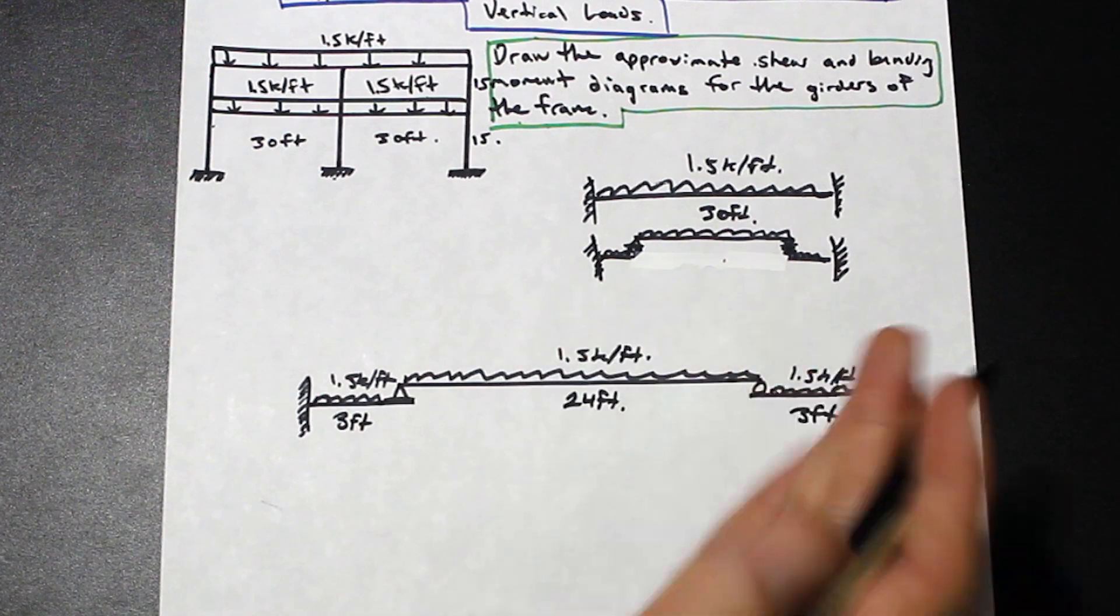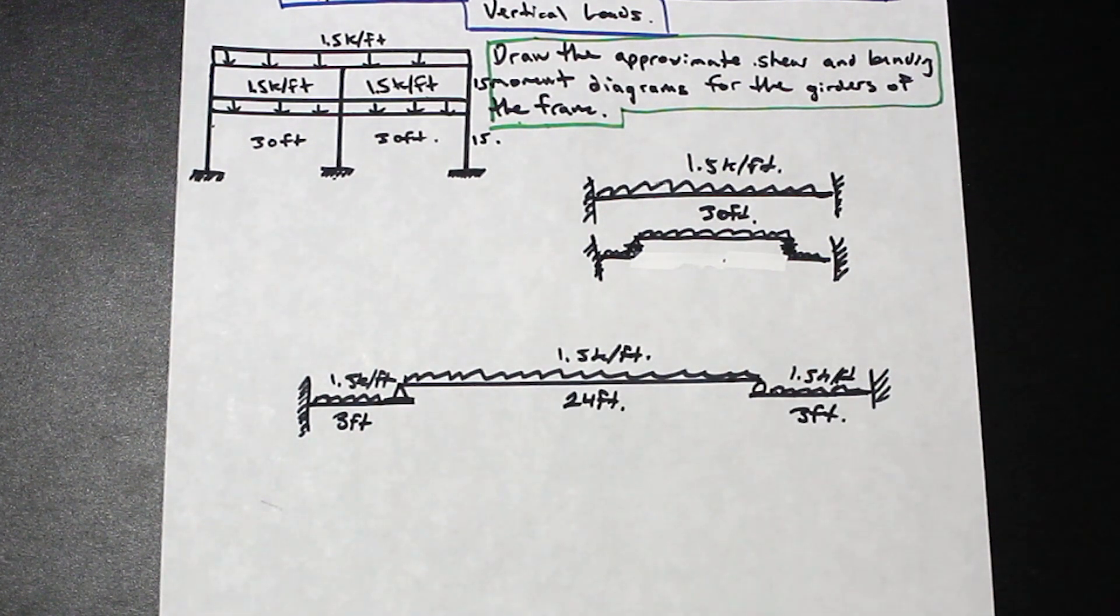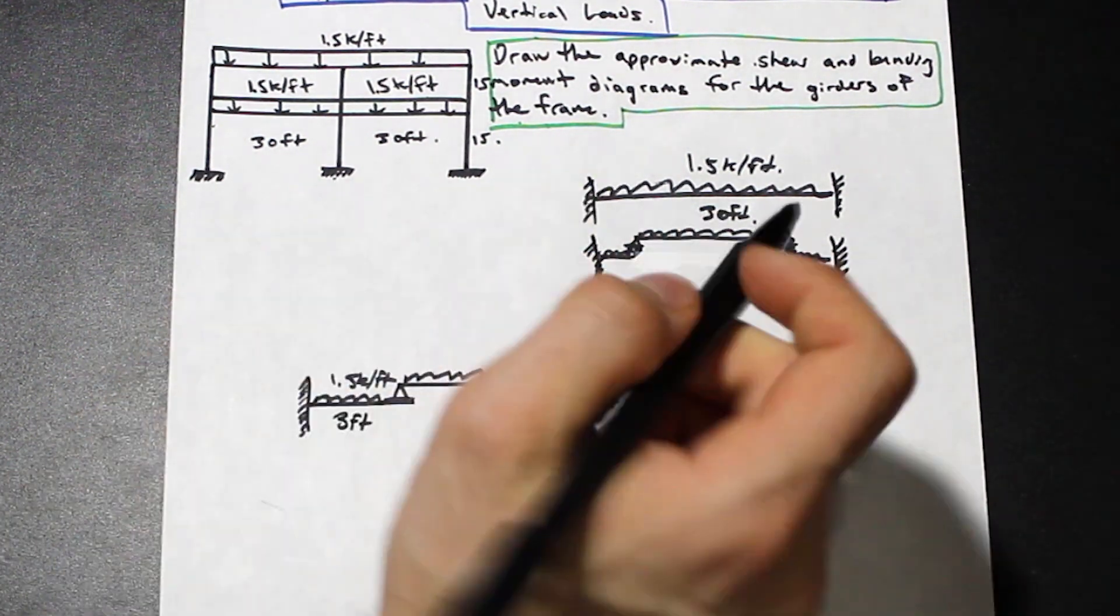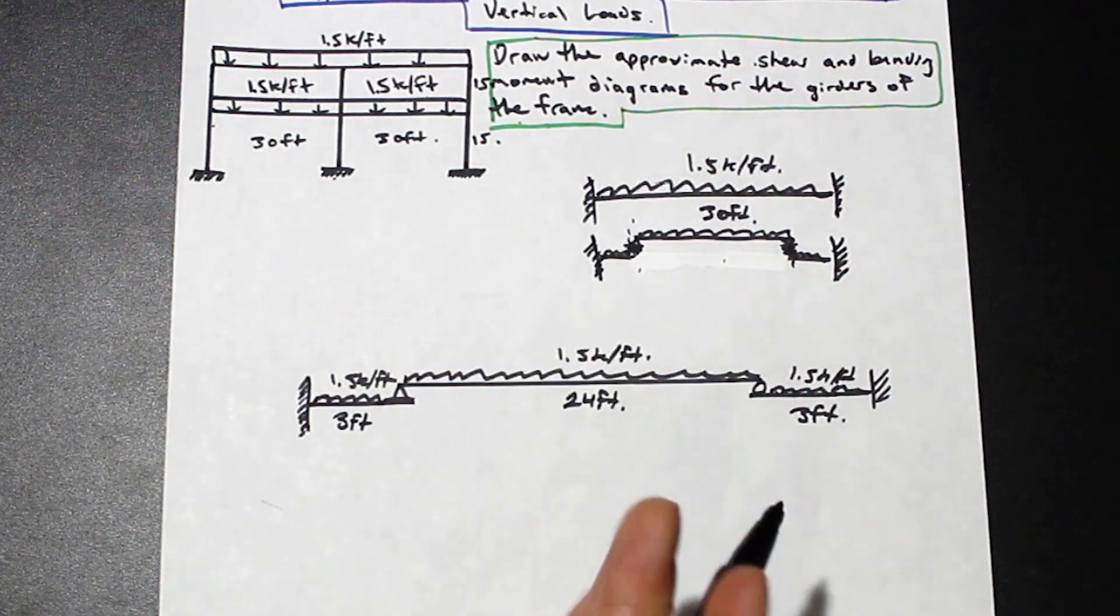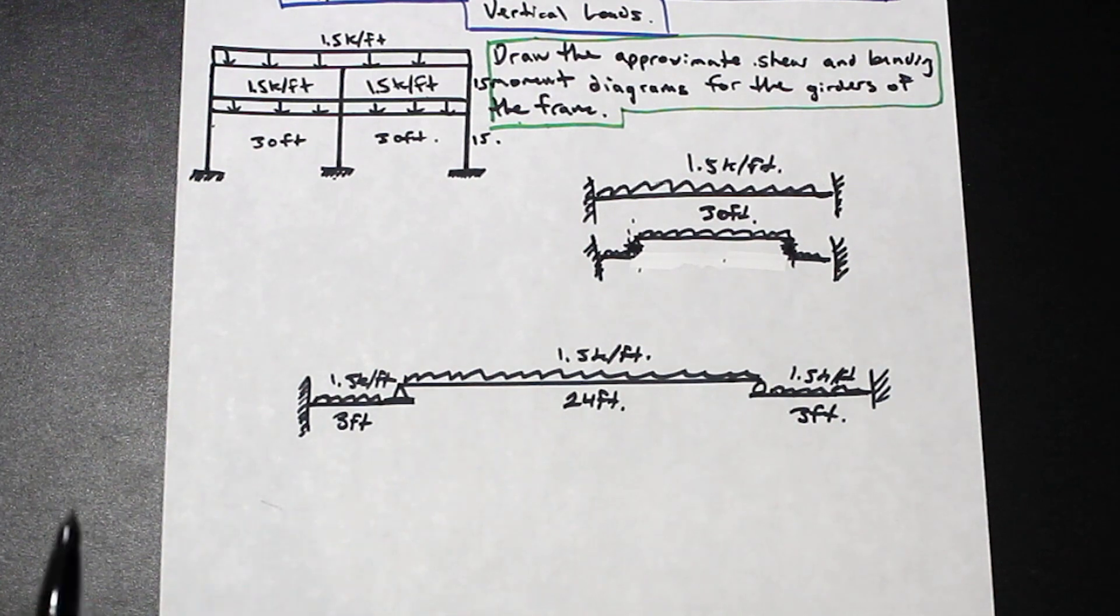And as you can see, now we have a beam that's actually really simple to solve, and obviously, this isn't going to be exact because we're not sure exactly where the inflection points are using this method. But it's going to be close, close enough for a lot of purposes. So let's go ahead and solve this.